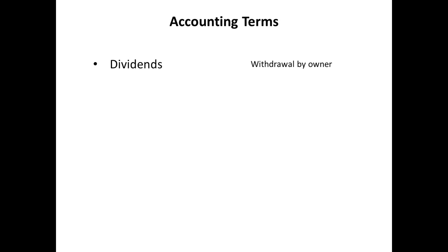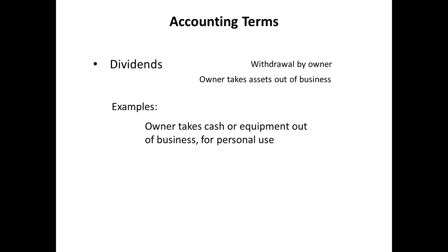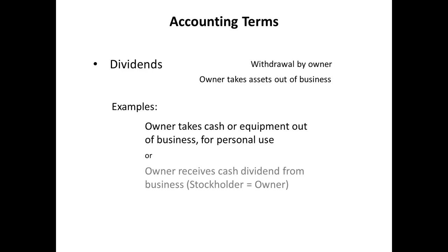Dividends or withdrawals by owner are the opposite of investments by owner. A withdrawal by owner occurs when an owner takes assets out of the business for personal use. For example, my neighbor the lawn guy supports himself and his family through the lawn business. It is likely that he regularly, maybe every Friday, withdraws cash from the business's bank account and deposits it into his personal bank account. This is a withdrawal by owner. Or if a business is organized as a corporation, cash going from the business to its owners — stockholders — has a specific name: dividend, but it is still a withdrawal by owner.